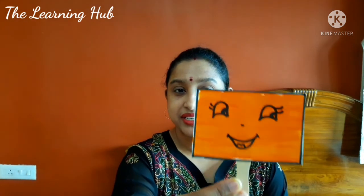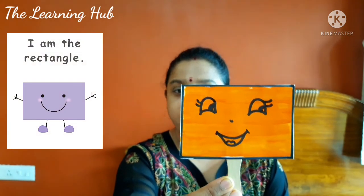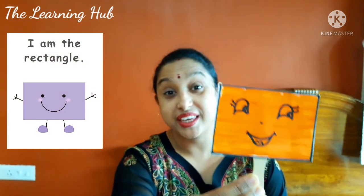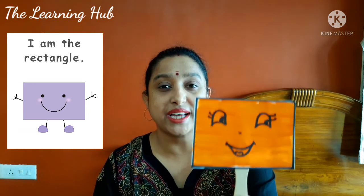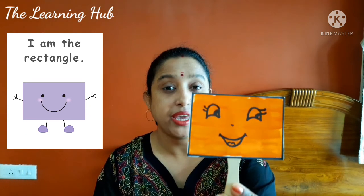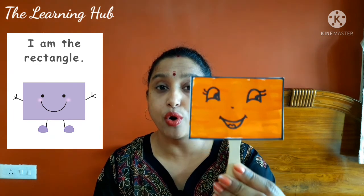And today we are going to learn about a new shape. So what is this shape? Let's see. Here it is! Hello friend, I am a rectangle shape. Yes, this is a rectangle shape. It has four sides and four corners.